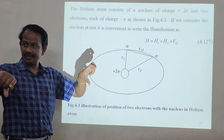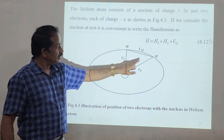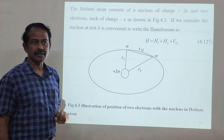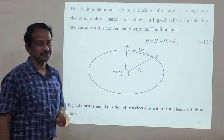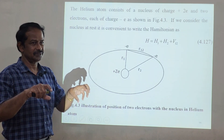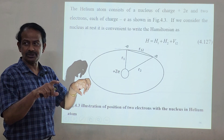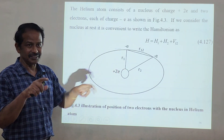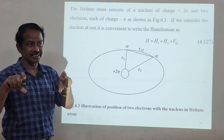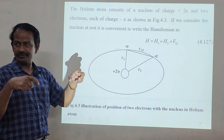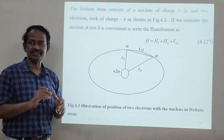The distance between the nucleus and the first electron is R1, and the distance to the second electron is R2. Since both electrons carry charge minus e, there is a repulsive force between them, giving an interaction energy of plus e squared. When this interaction energy is added to the system, the total energy increases.